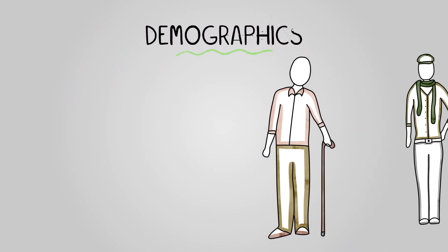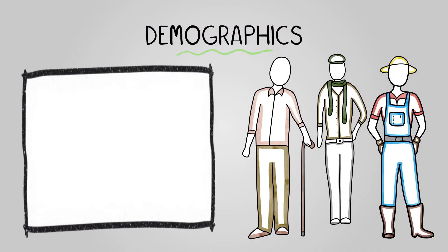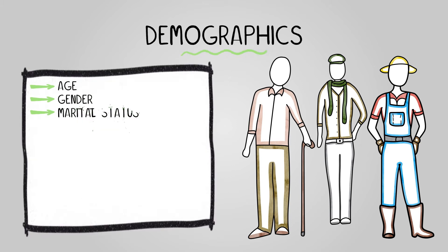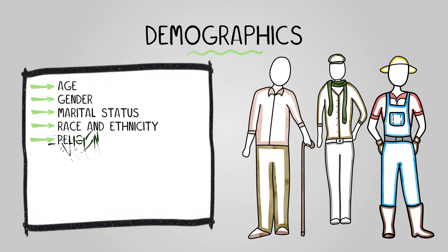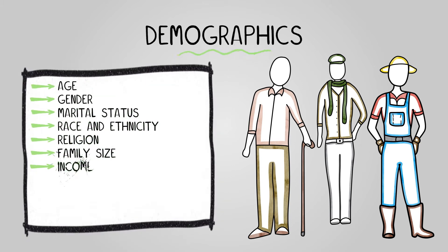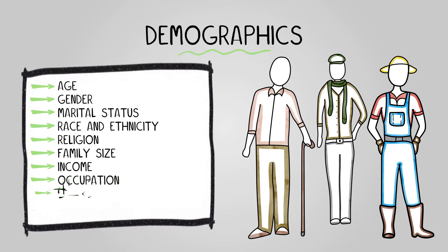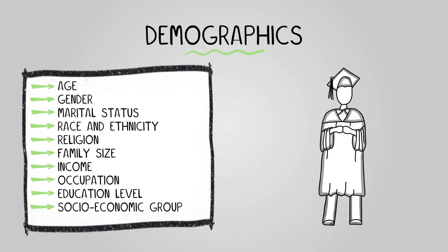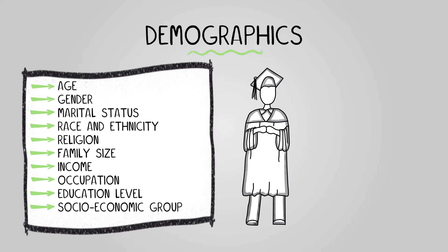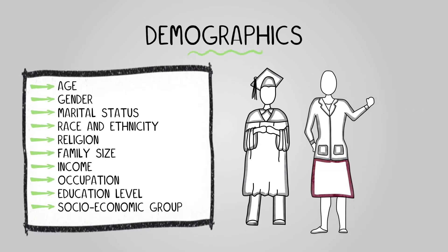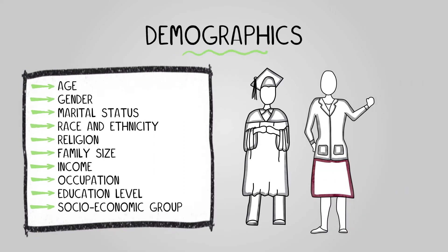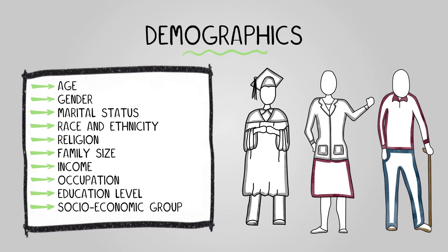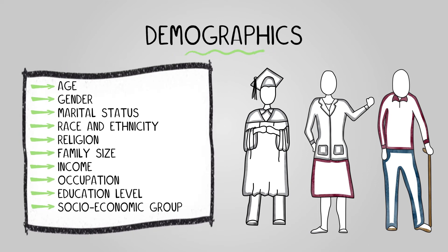Demographic segmentation categorizes customers by factors such as age, gender, marital status, race and ethnicity, religion, family size, income, occupation, education level, and socioeconomic group. This helps businesses target specific groups like college students with part-time jobs, women aged 40 to 50 with full-time employment and a yearly income of at least £40,000, or retired individuals with no responsibility for children and a yearly income of at least £30,000.